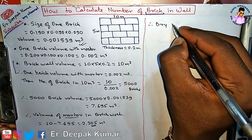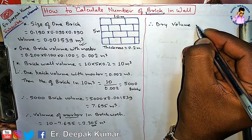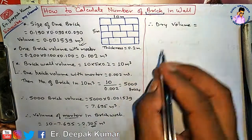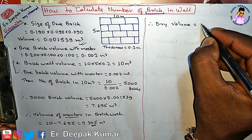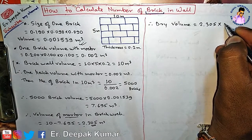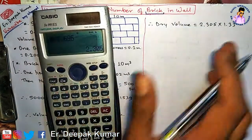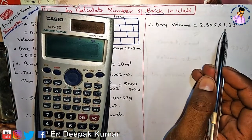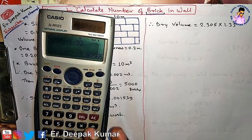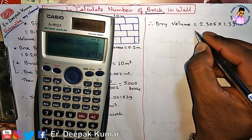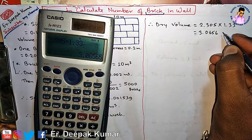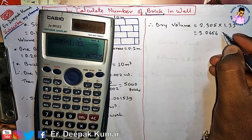Now we know the dry volume. This 2.305 is the wet volume. To convert wet volume into dry volume, we multiply by 1.33: 2.305 × 1.33 gives us 3.0656 cubic meter.